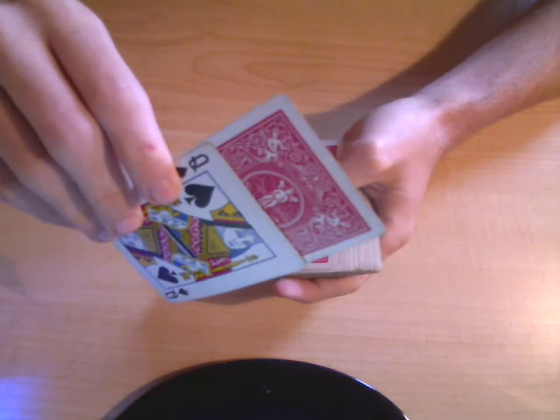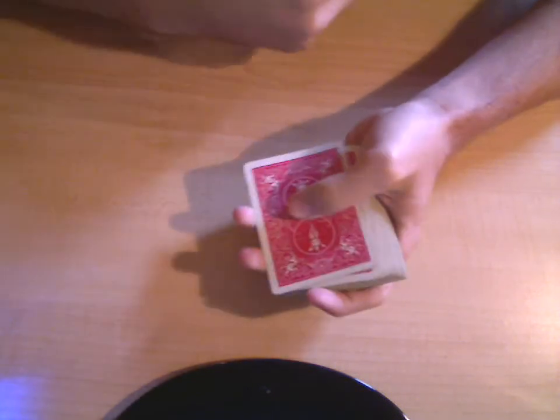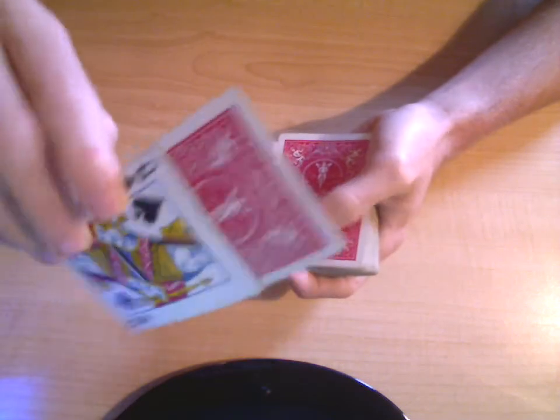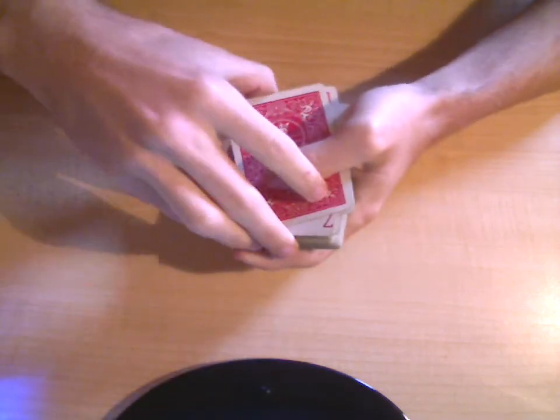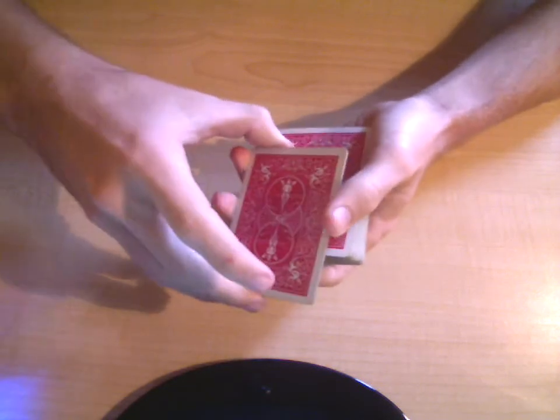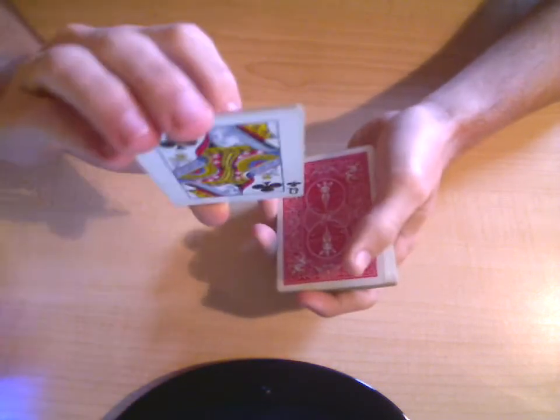And then when you're doing this, showing them that, catch a break underneath the top card. Just slide it over like that. And then you square it up. And then you steal away that one extra card that you got the pinky break underneath, which was the other queen.